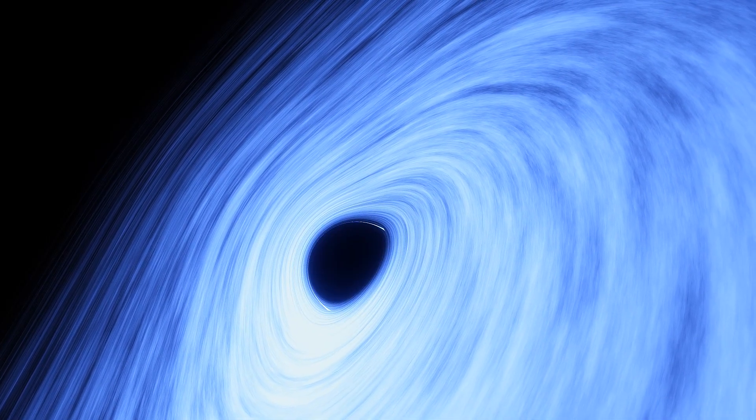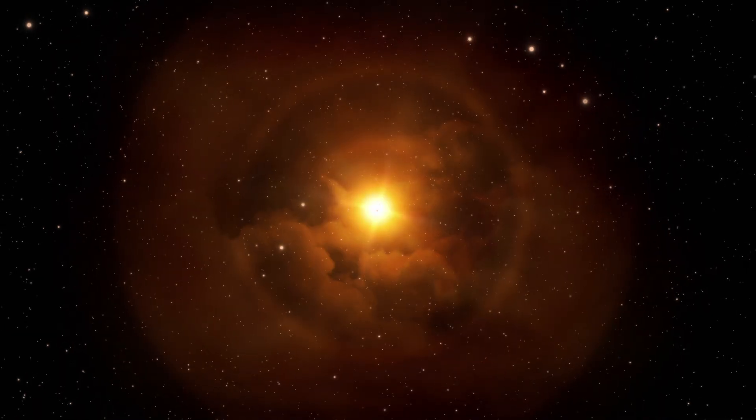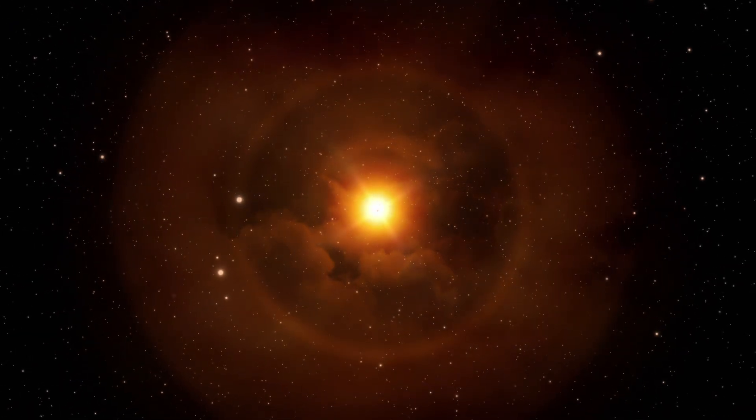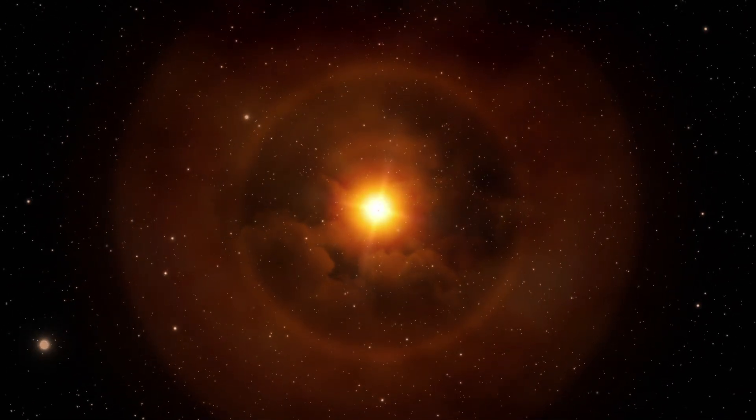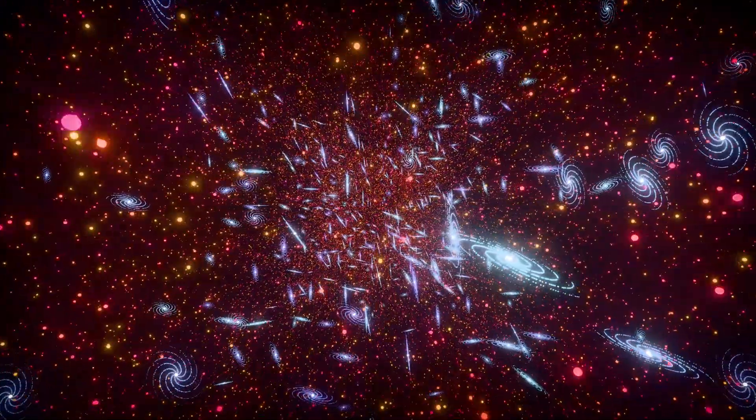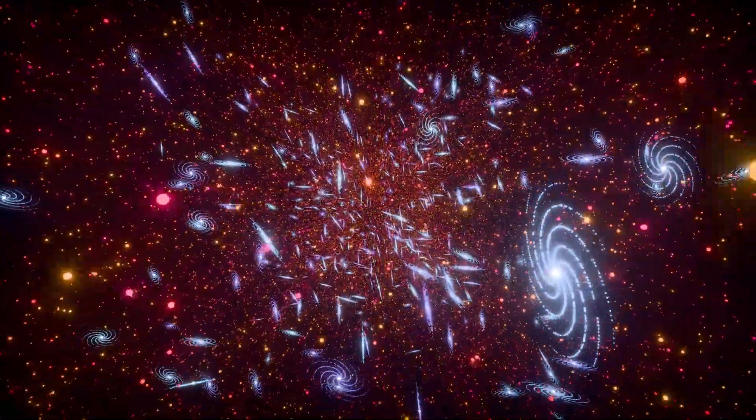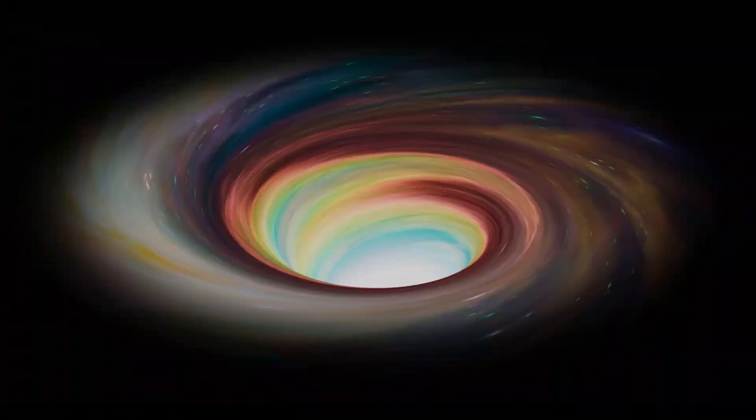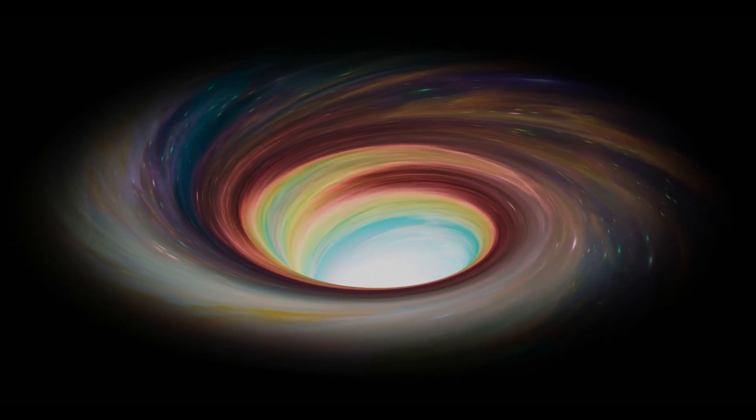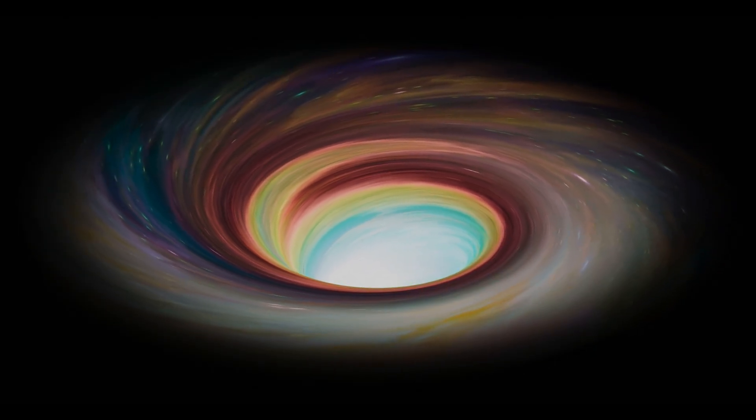Next, gravity isn't playing by Einstein's rules. Normally, gravity weakens with distance, like a tug-of-war rope getting slacker the farther you pull. But Webb sees galaxies pulling together in unexpected ways at huge scales. These galaxies act like gravity is stronger farther out, not weaker.